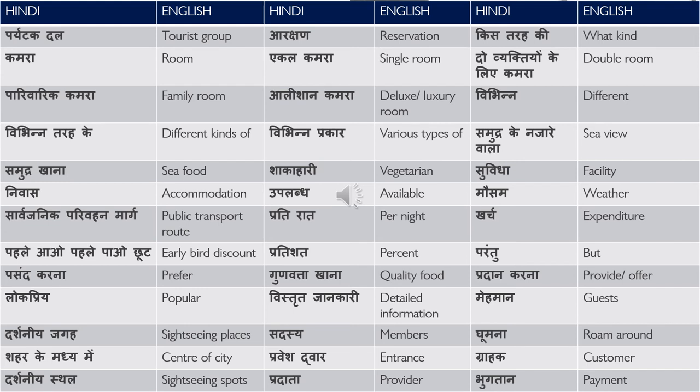परंतु — but. पसंद करना — prefer. गुणवत्ता खाना — quality food. गुणवत्ता — quality. For example: good quality of life — अच्छे गुणवत्ता वाला जीवन. प्रदान करना — provide or offer. In this context, offer means to provide something. The other meaning of offer is प्रस्ताव, but that is not what it means in this context.